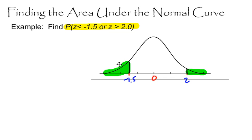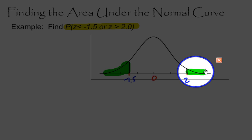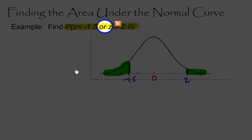So I have to find the area of both of these shaded regions. I'm going to find the area of this region first, and then I'm going to find the area of this shaded region next. And the word or in probability tells us to add. So I'm going to find the area of both of these shaded regions and add them together.